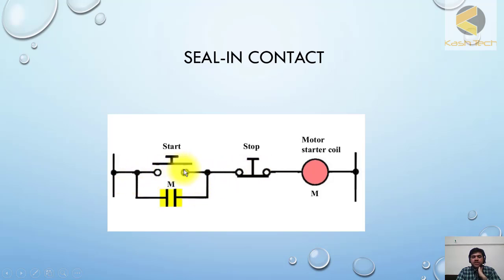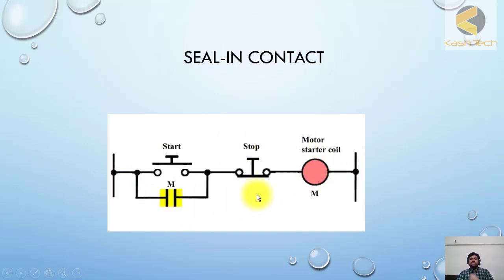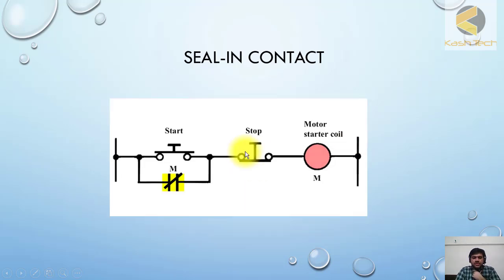When the starter coil or auxiliary relay is energized through DC, this contact becomes closed and now the circuit is sealed-in through this contact — this contact is called the seal-in contact. So even if I release the start button, the starter coil keeps energized through this contact because it is now closed and latched. If I want to stop this circuit, I press the stop push button: as soon as I press it, DC supply to the coil is disconnected, this contact becomes open, and even when I release the stop button back, the coil will not re-energize.